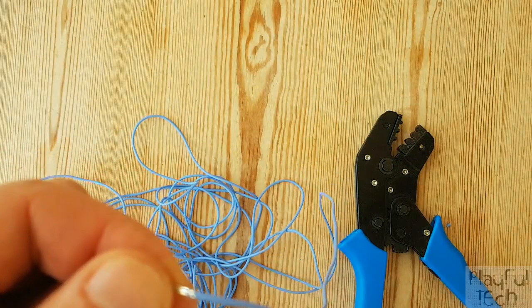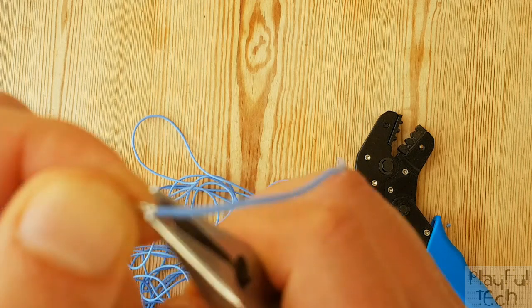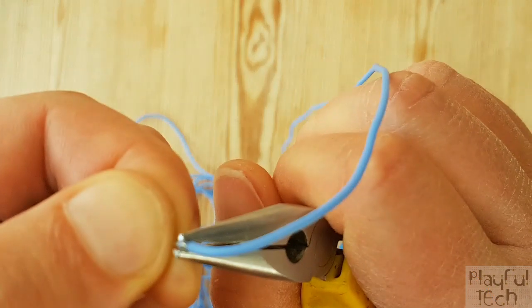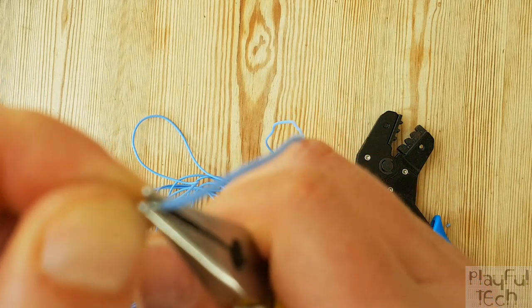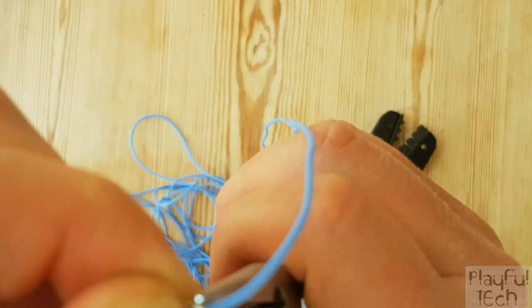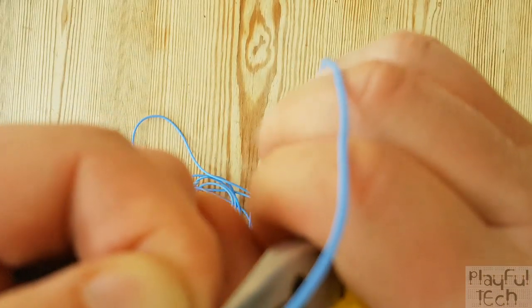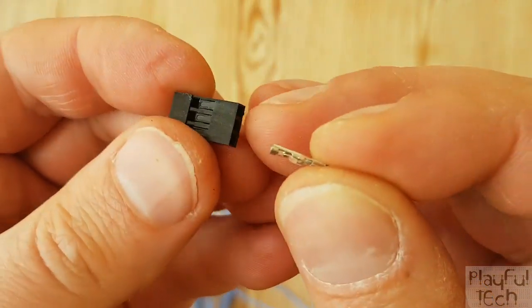When that happens, you can either crimp it again, or in my case, what I'm going to do is just take a pair of needle-nose pliers and just gently close those cable supports up just a little bit more, just so it gets snugly inside that housing. Let's have another go.